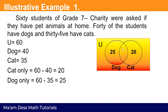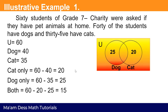Next, how do we find their intersection — or those who have both cats and dogs? We subtract 60 minus 20 (cats only) minus 25 (dogs only), and we get 15. So those 15 students have both a pet dog and a pet cat. We place this value in the intersection of the Venn diagram.